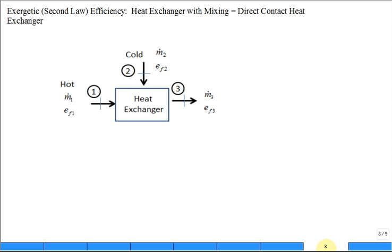Now we have a heat exchanger, but this one is called a direct contact heat exchanger. Think about it: I bring in a hot fluid from point one, I bring in a cold fluid from point two, and we only have one outlet at three. So the cold and hot mix to create something that's lukewarm.